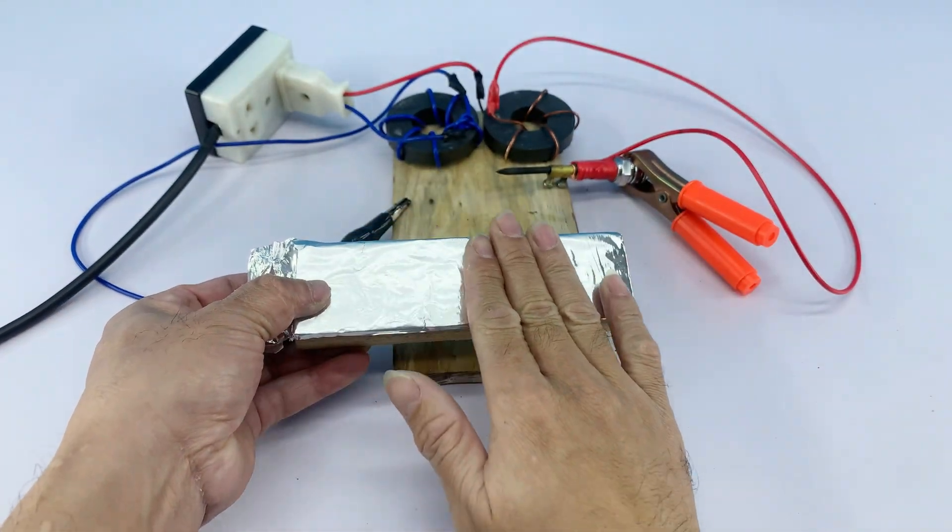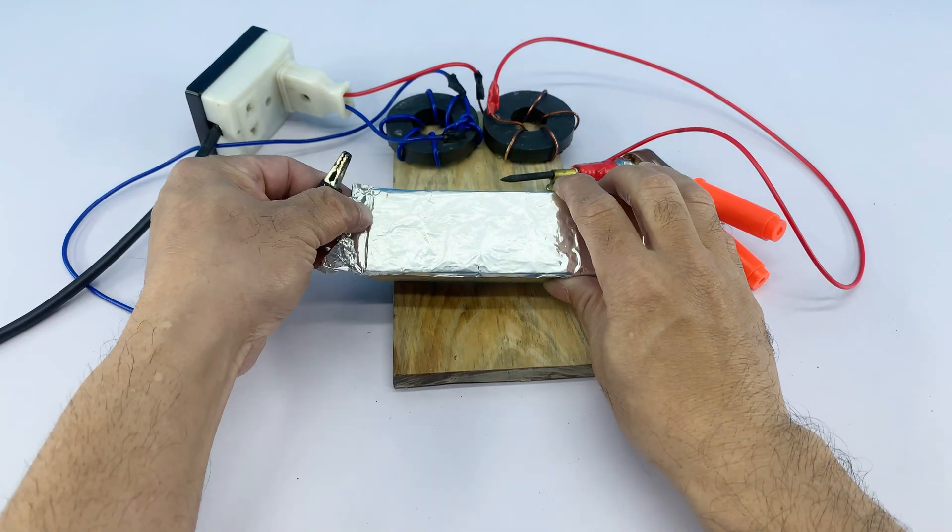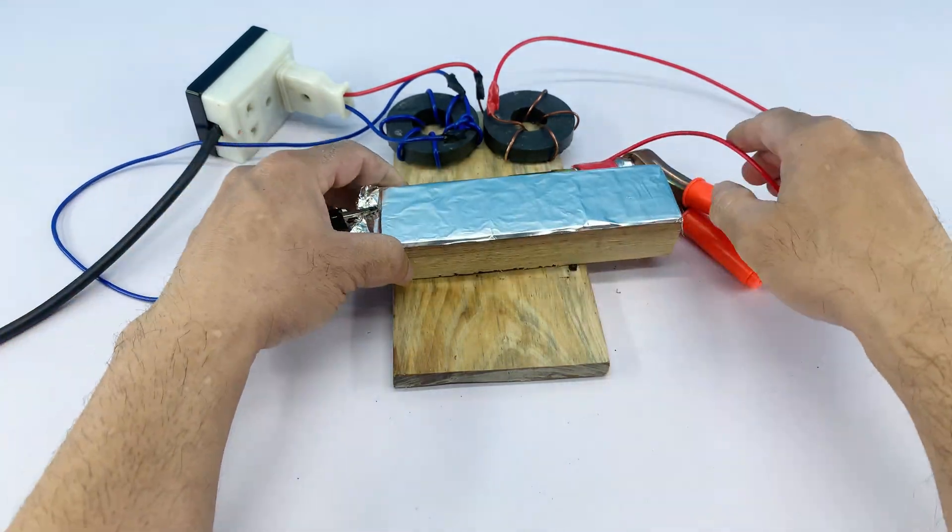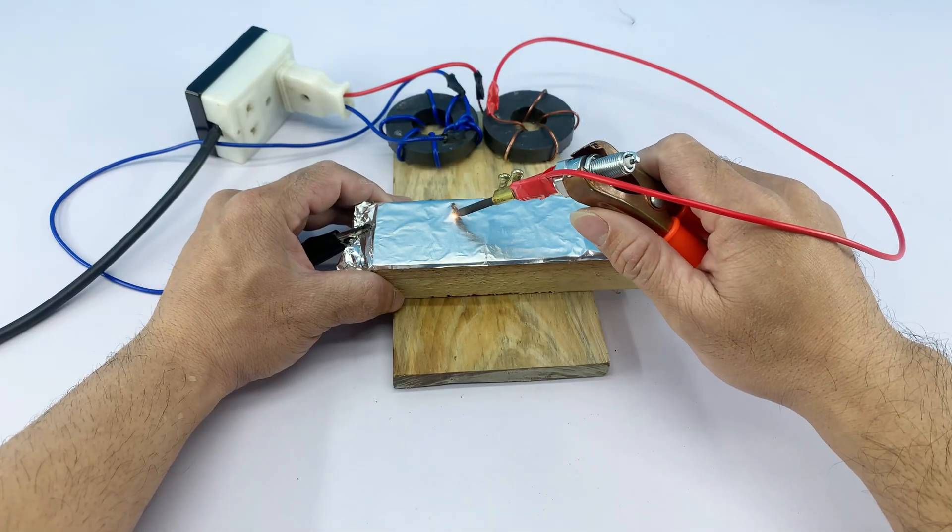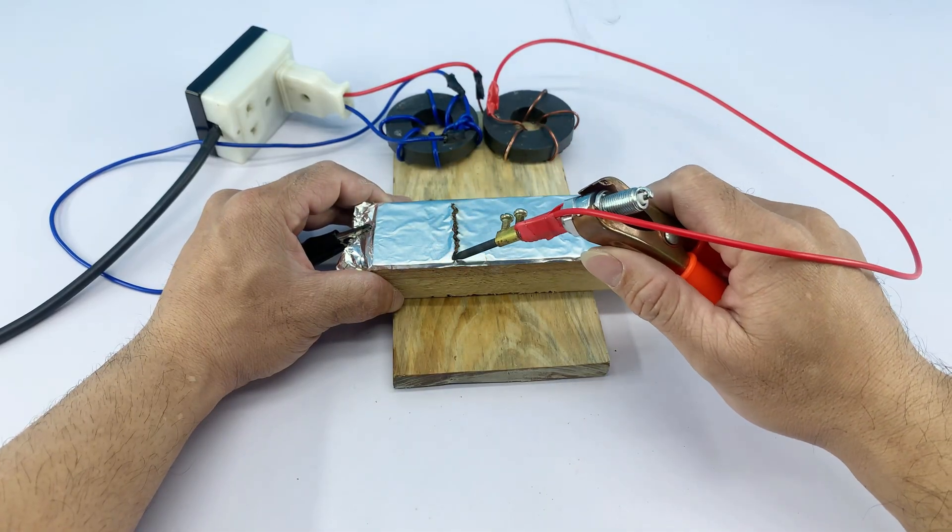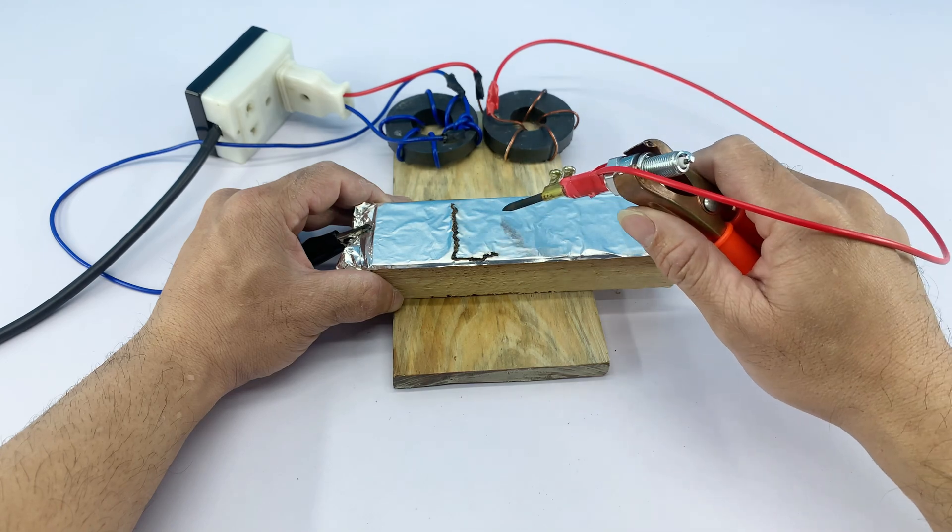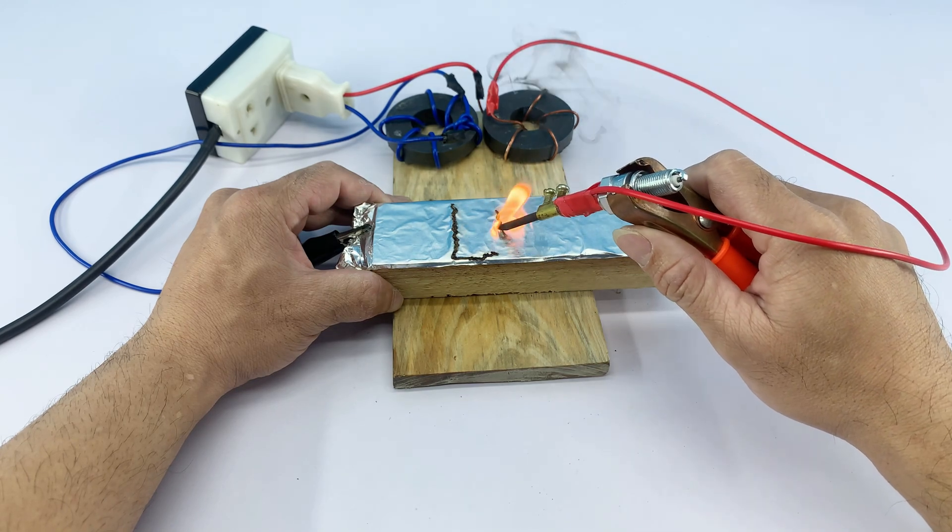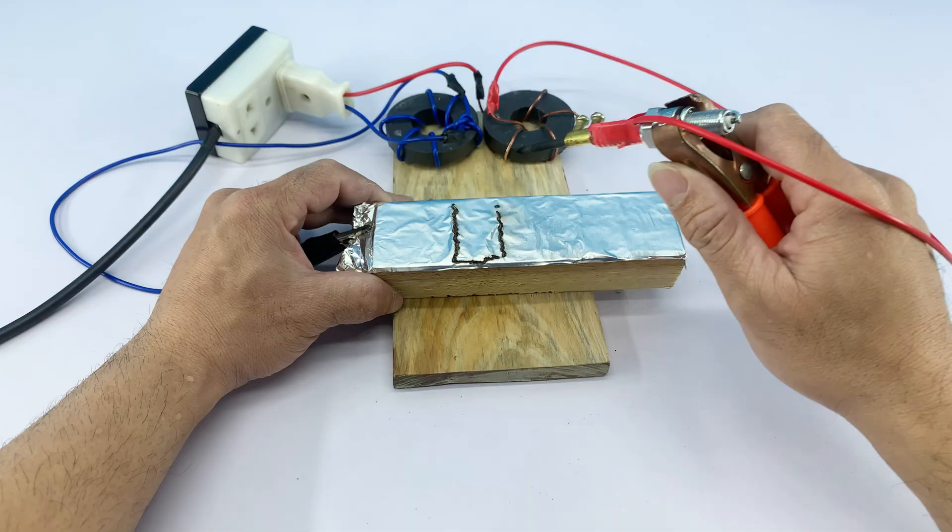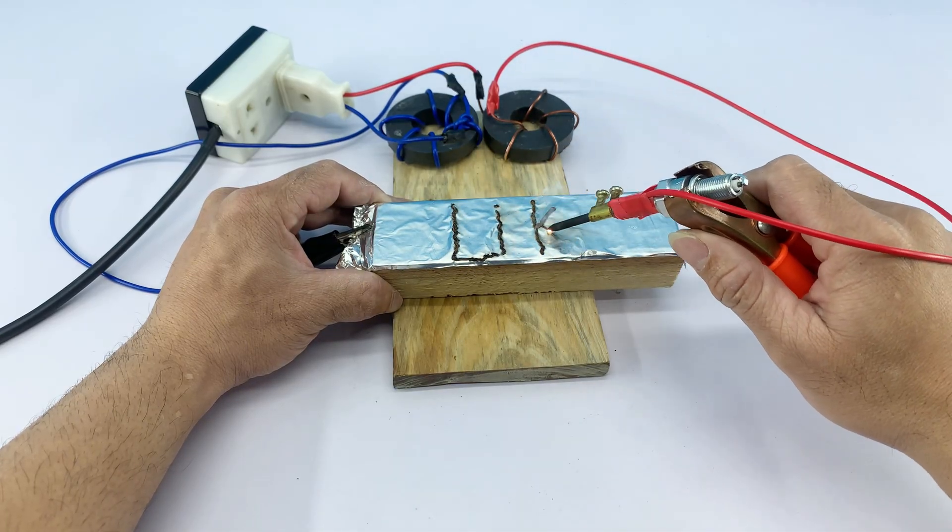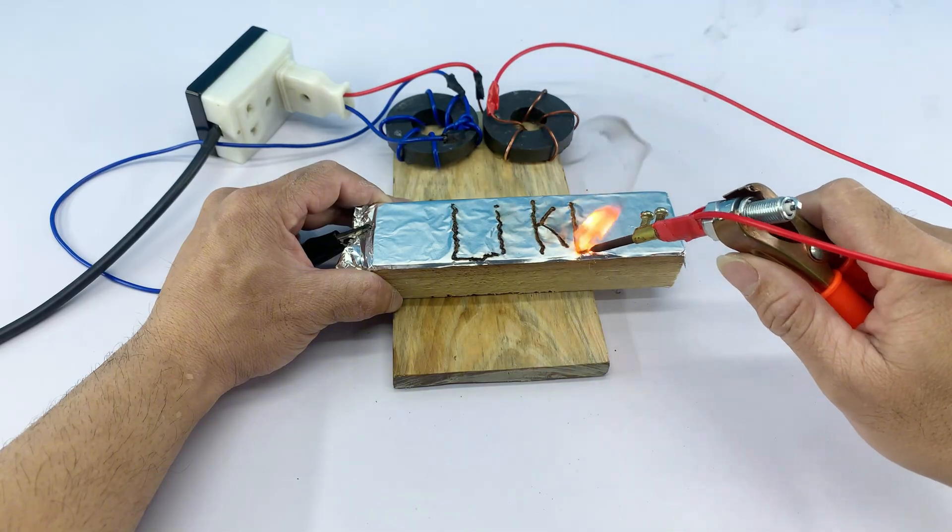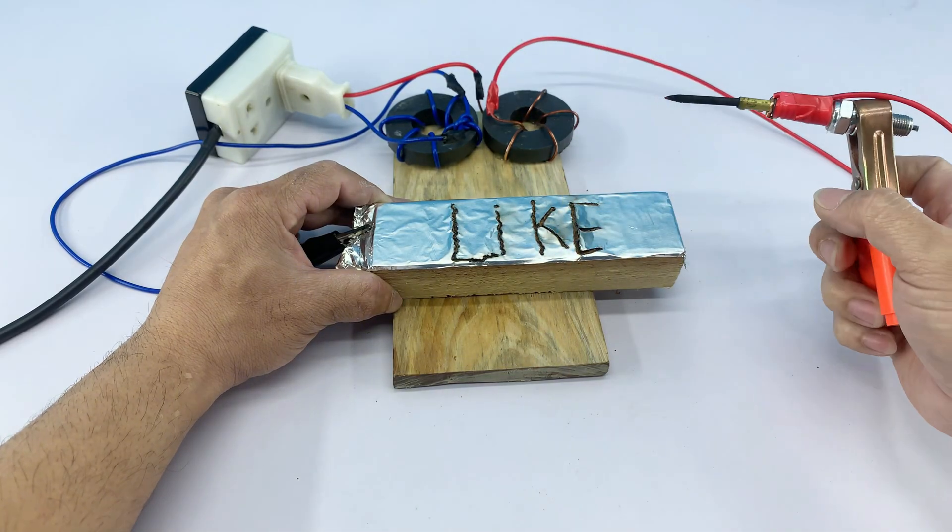Our amazing new tool, transforming simple components into a powerful metal melting device. You can even use it to write on metal surfaces, just like I'm doing here, spelling out like... This DIY project proves that with a little creativity and understanding of basic principles, you can achieve fantastic results.